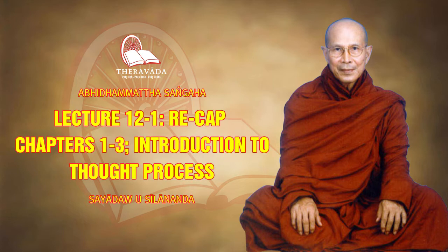Akusala cittas are those called unwholesome consciousness — these types of consciousness are accompanied by unwholesome mental states. Mental states, or cetasikas, are treated in the second chapter. There are akusala cittas first, and then ahetuka cittas, rootless consciousness, like seeing, hearing, and so on.